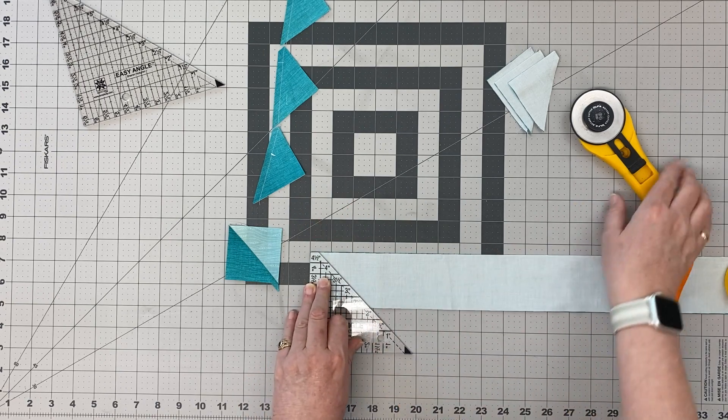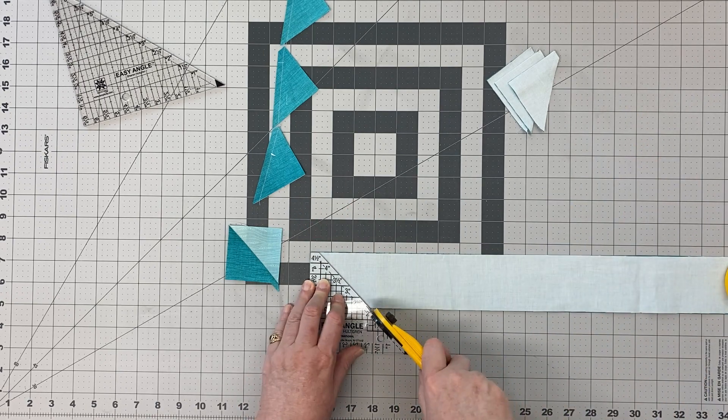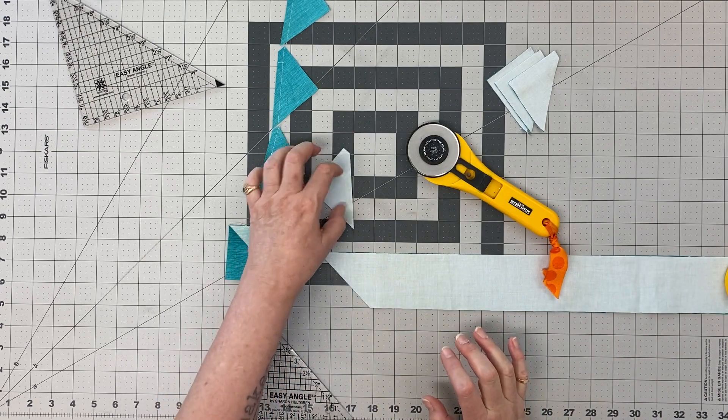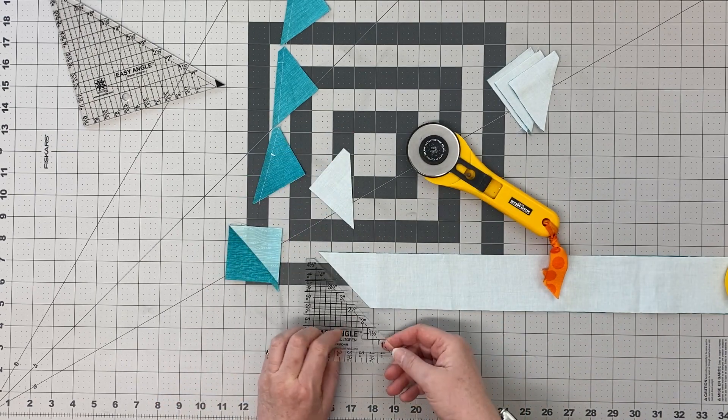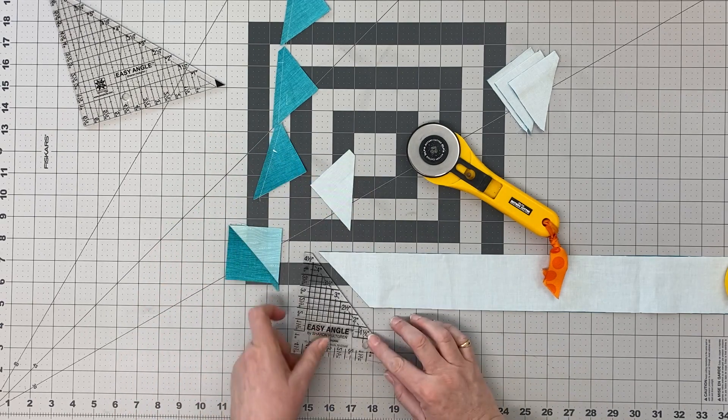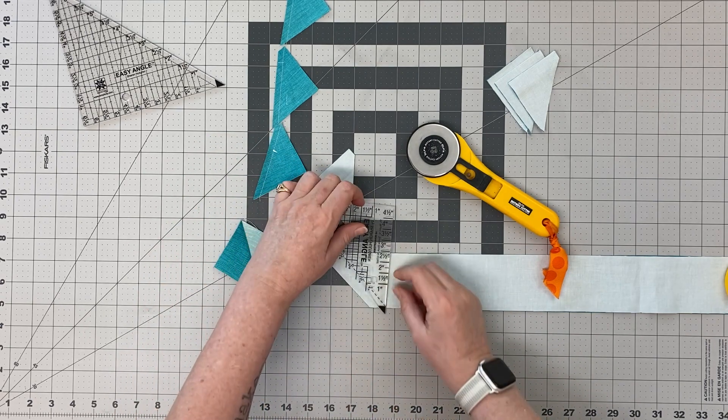one, you can either rotate the ruler around like this, or you can flip on the diagonal and use the little black line to tell you where you are. We're going to align that line to